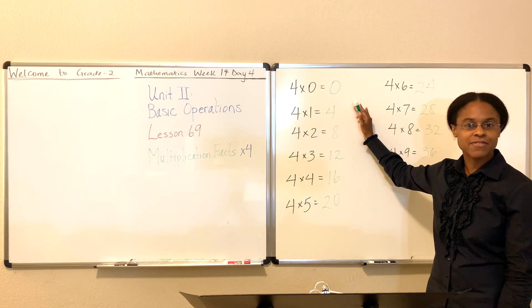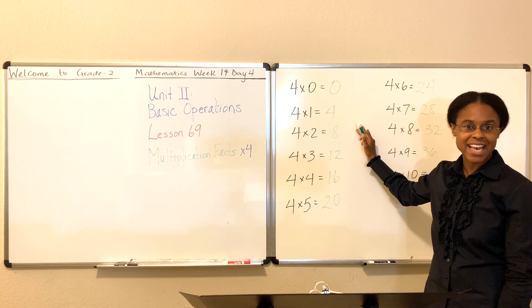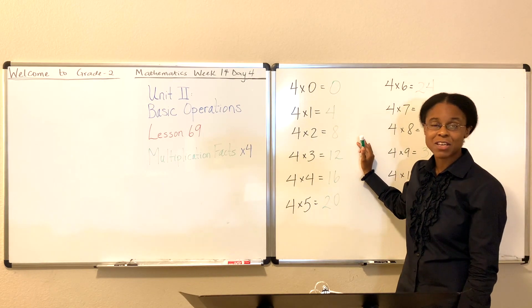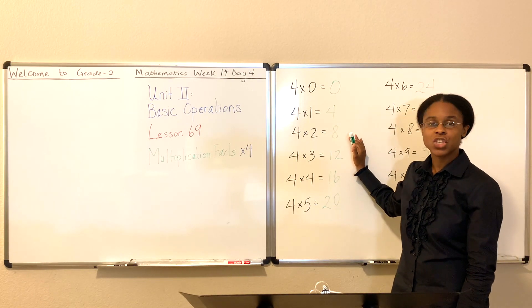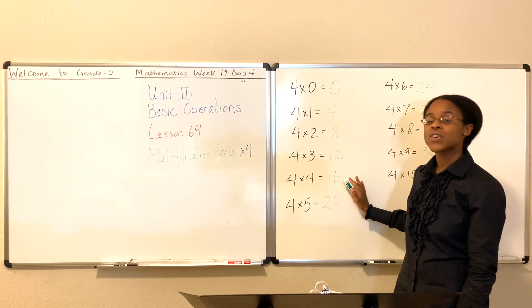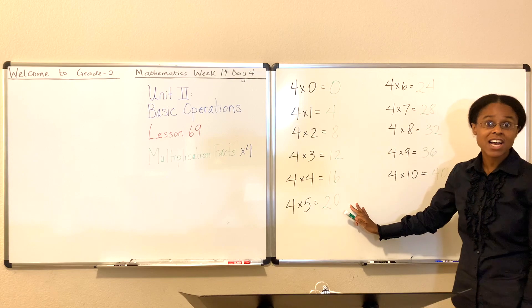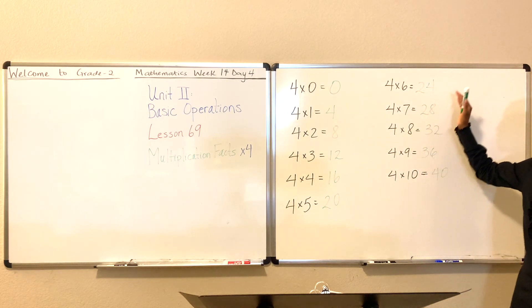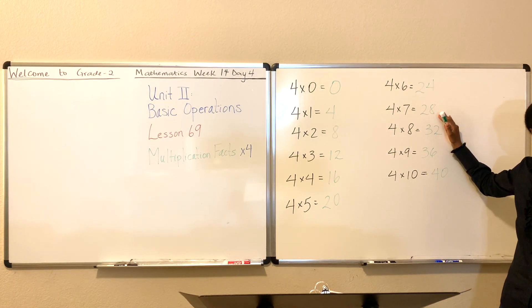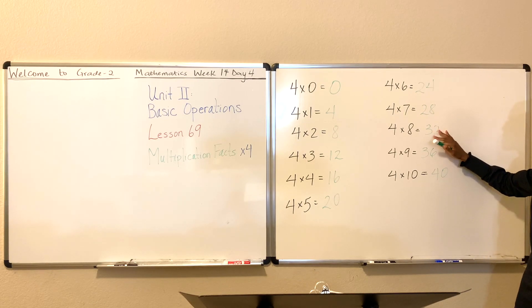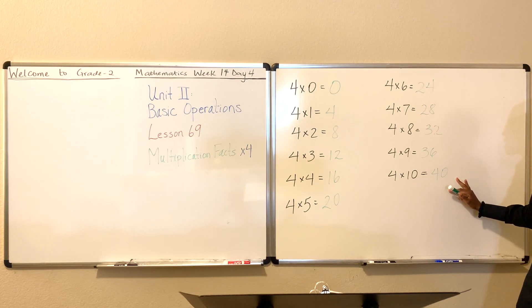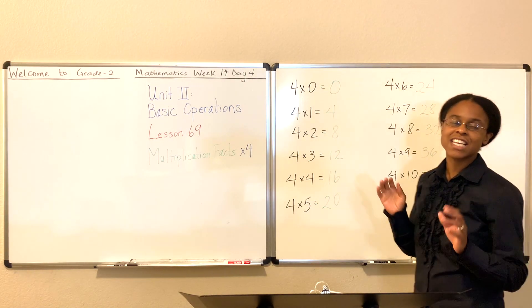Four times one is four. Four times two is eight — say it along with me so you can hear yourself saying it and commit it to memory. Four times two is eight. Four times three is 12. Four times four is 16. Four times five is 20. Four times six is 24. Four times seven is 28. Four times eight is 32. Four times nine is 36. And four times ten is 40.